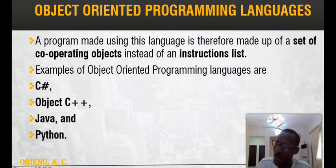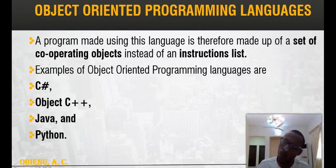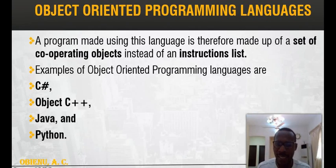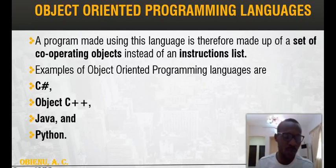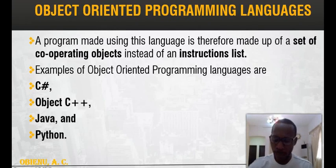Programs in OOP are made by a set of cooperating objects instead of just an instruction list. For example, building a calculator: one object handles addition, one handles subtraction, one handles division, and at the end these objects cooperate and communicate, working as one. Examples of OOP languages include C#, Objective-C, C++, Java, and Python. Python is among the most current. Those are the languages in the OOP category.